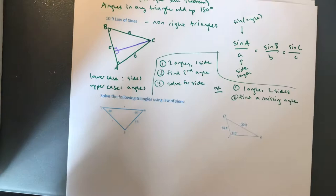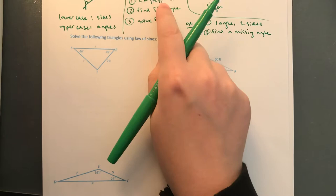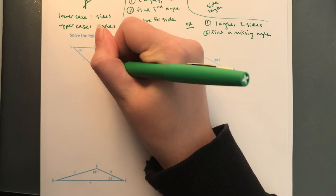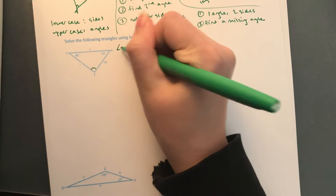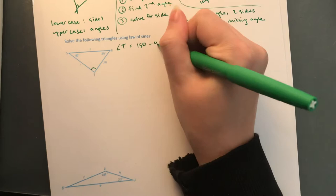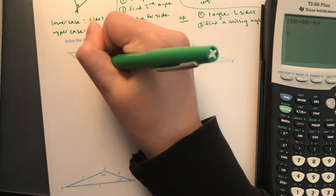Alright, so that's everything needed to preface these problems. In this first example we have two angles and one side, so we're in case one. The first thing to do is find the third angle. We're missing angle T — we have S and R, so using the triangle sum theorem: angle T equals 180 minus 40 minus 49. So T is 91 degrees.